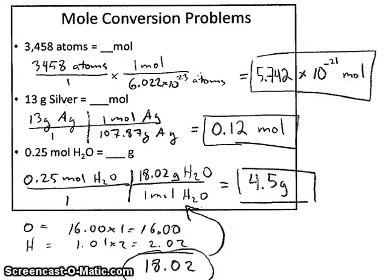So we can see here the work that was required to complete those three problems. We have 3,458 atoms. We're going to use Avogadro's number to convert this from number of atoms to number of moles. We would calculate an answer of 5.742 times 10 to the minus 21 moles. Our second problem was 13 grams of silver. We know that one mole of silver will have a mass of 107.87 grams. That's from the periodic table. This would allow us to calculate an answer of 0.12 moles.